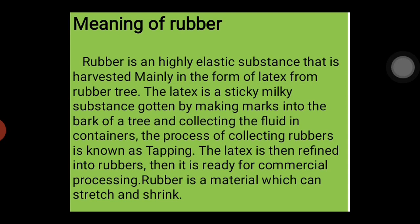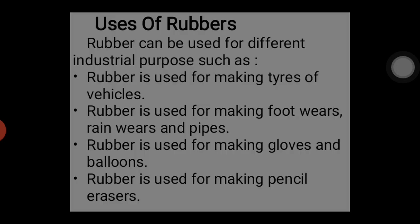Rubber is a material which can stretch and can shrink. One thing to take notice of is that rubber is gotten from latex, it is a highly elastic substance, and latex is gotten from trees. When you cut the bark of trees you get latex, so you can say rubber is gotten from trees.